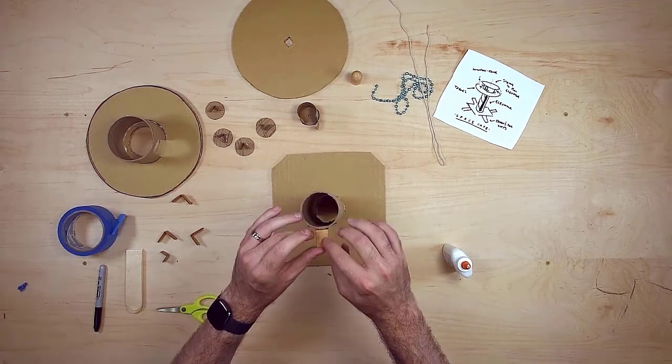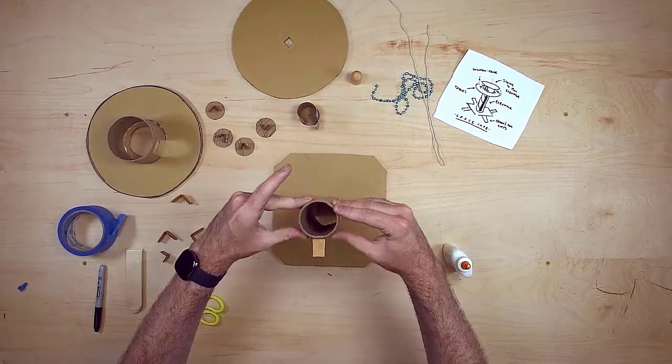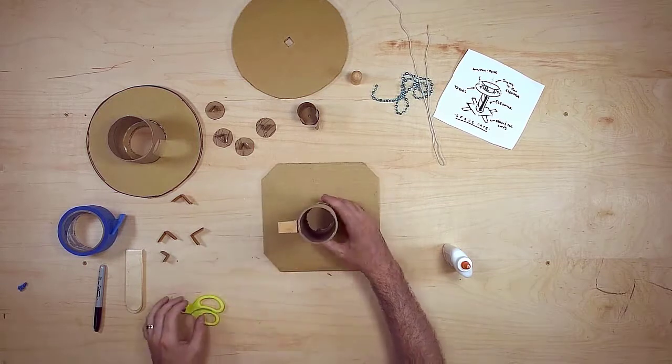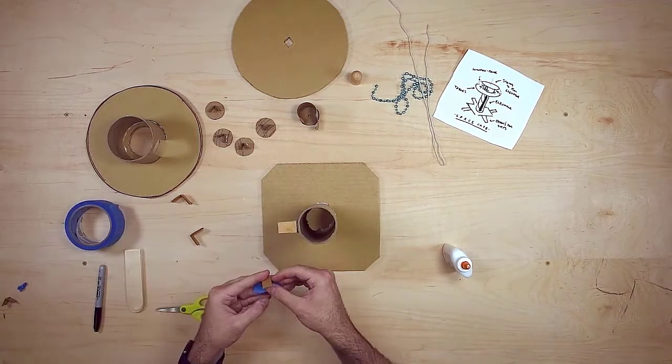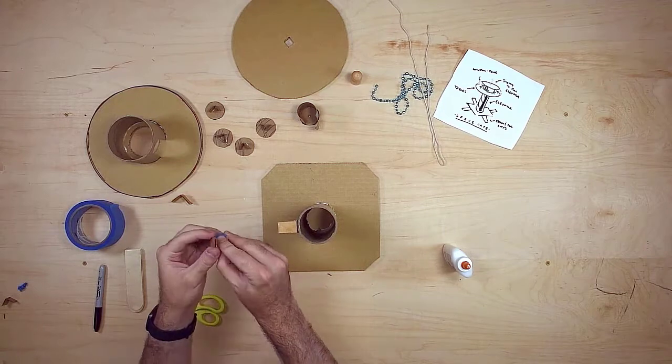I add glue to make sure it holds on nice and strong and then continue adding supports to all four sides. The supports sit right along the top edge of the tube so that the cafe will be at the very top.